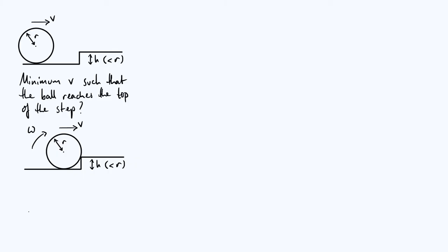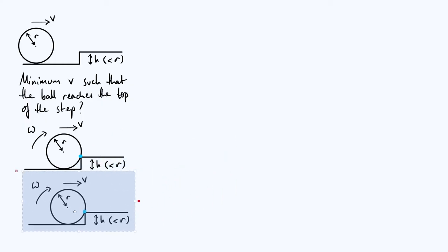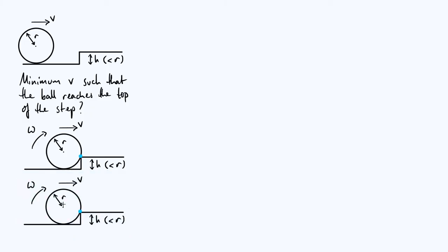We're going to make the assumption that the collision is inelastic. In other words, instead of bouncing back where it came from, the point of contact between the ball and the step — this point over here — is going to remain fixed. As soon as the ball comes into contact with the step, that point is fixed, which means we can describe the motion of the ball after contact as a purely rotational motion about that point of contact.